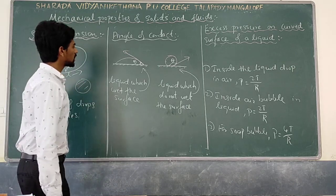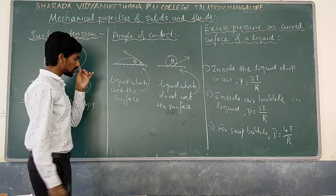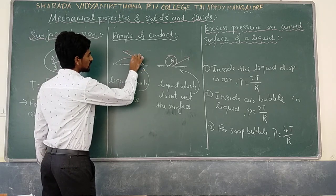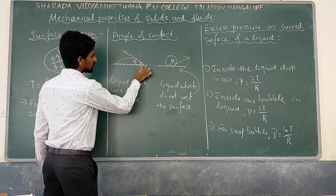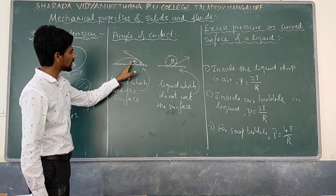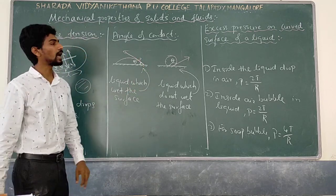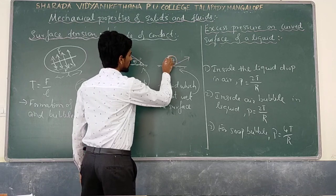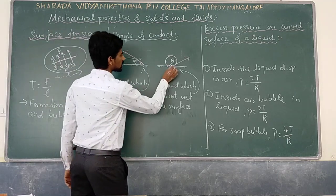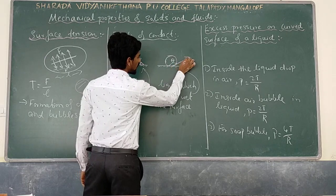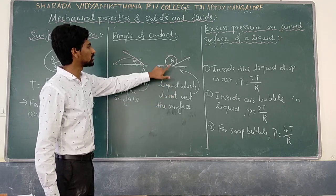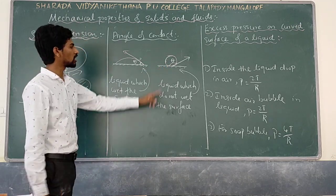Angle of contact: for water, the liquid wets the surface, and the angle of contact theta between the tangent to the liquid surface and the solid surface (measured inside the liquid) is less than 90 degrees — an acute angle. For mercury, it does not wet the surface and forms a convex drop; the angle of contact is more than 90 degrees — an obtuse angle. If theta is more than 90 degrees, the liquid does not wet the surface.